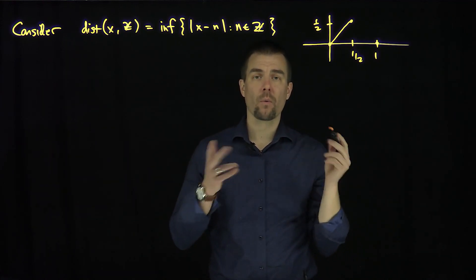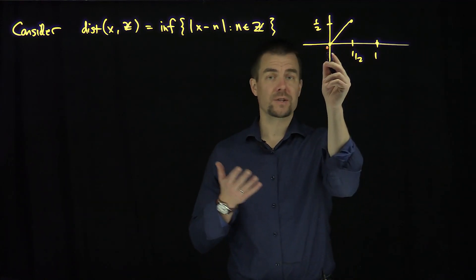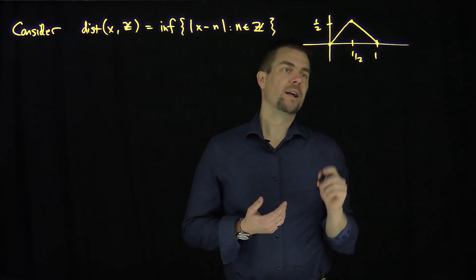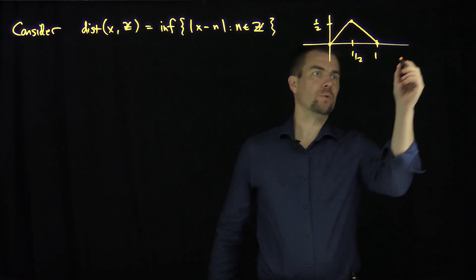One half is exactly one half unit away from the closest integer. In this case it's going to be symmetric, either zero or one. And then it starts to decline like this. And so that's one period, and of course then this function will just repeat itself.